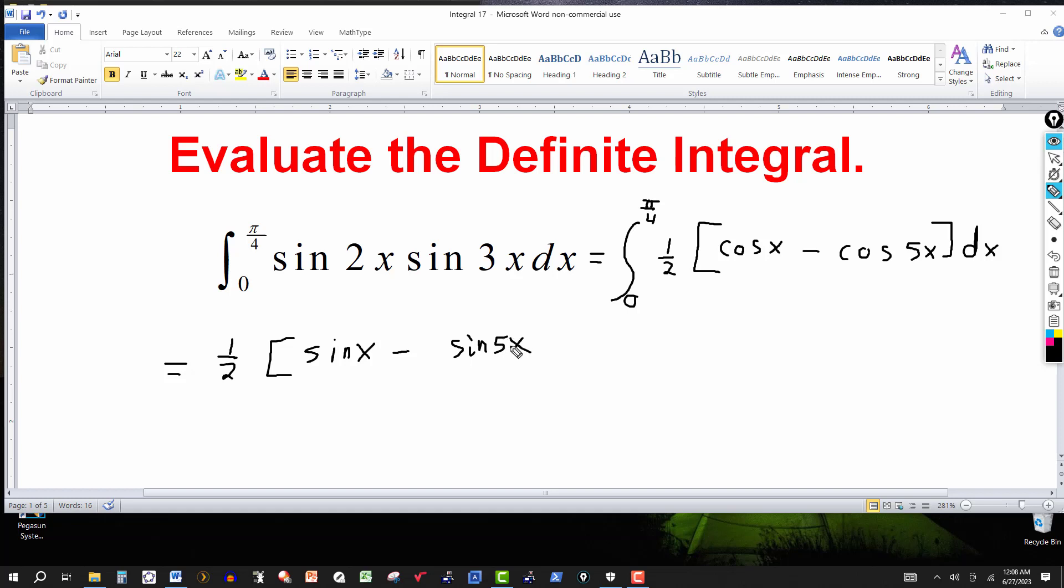The derivative of 5x is 5, so we're going to put this one-fifth out in front, and then this is evaluated from 0 to pi over 4.